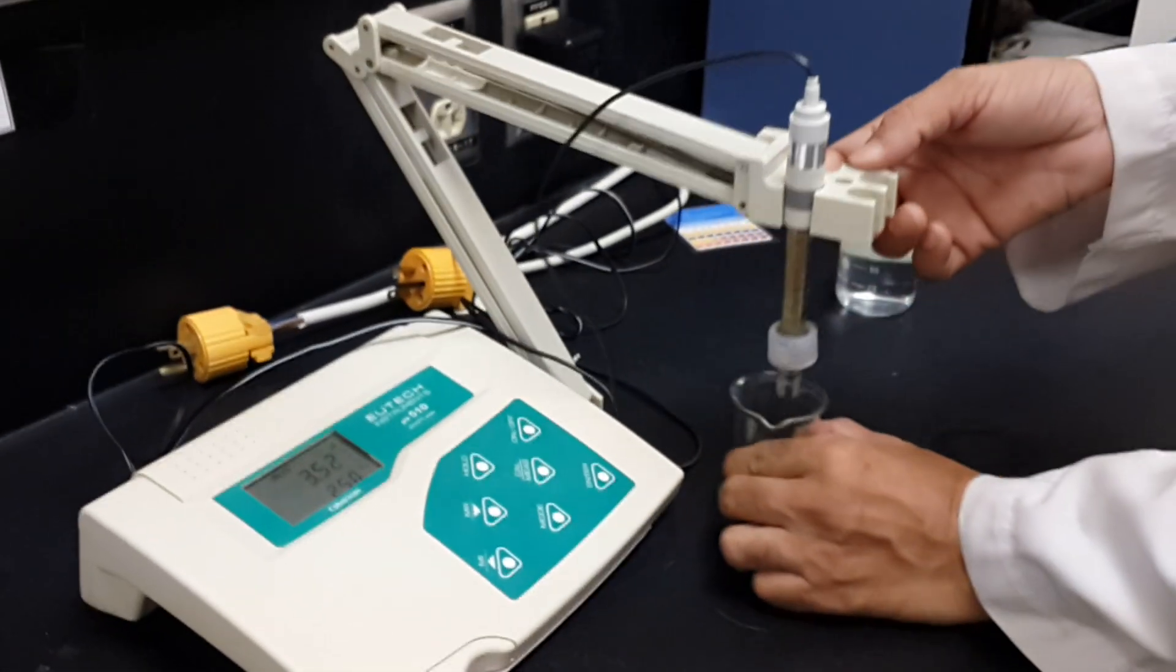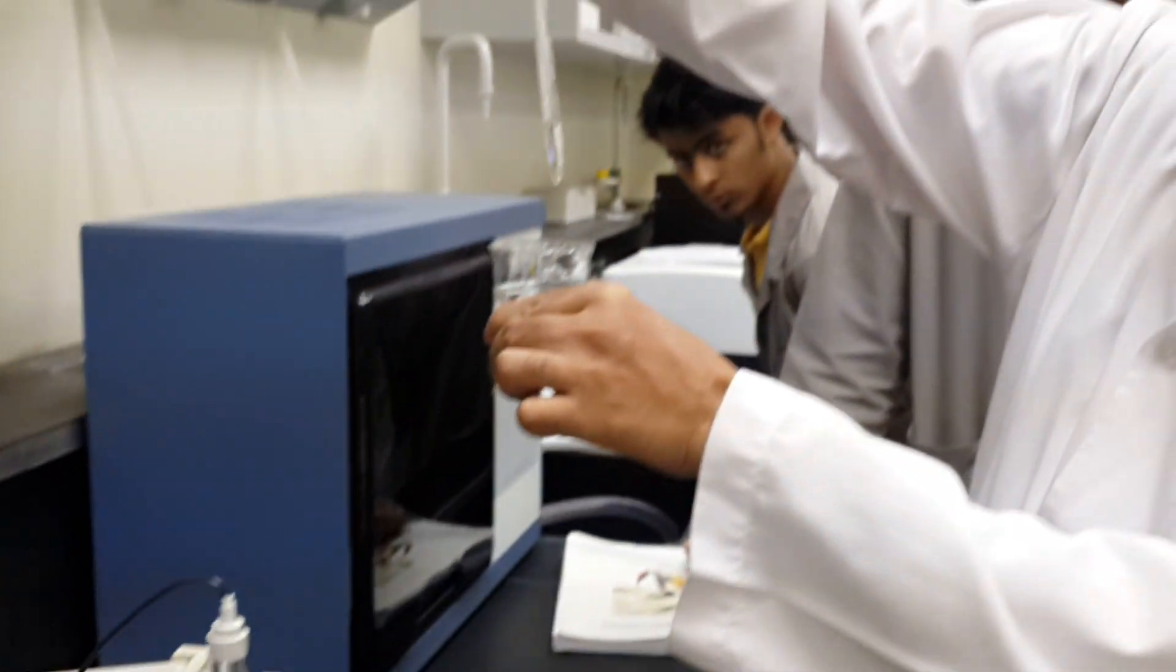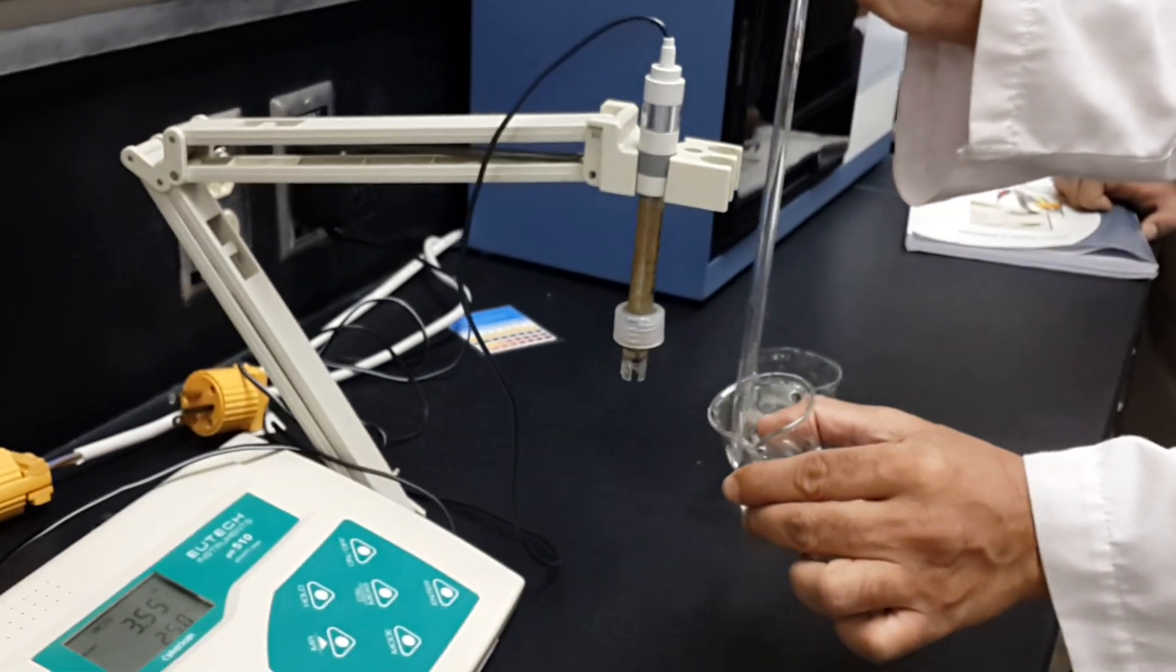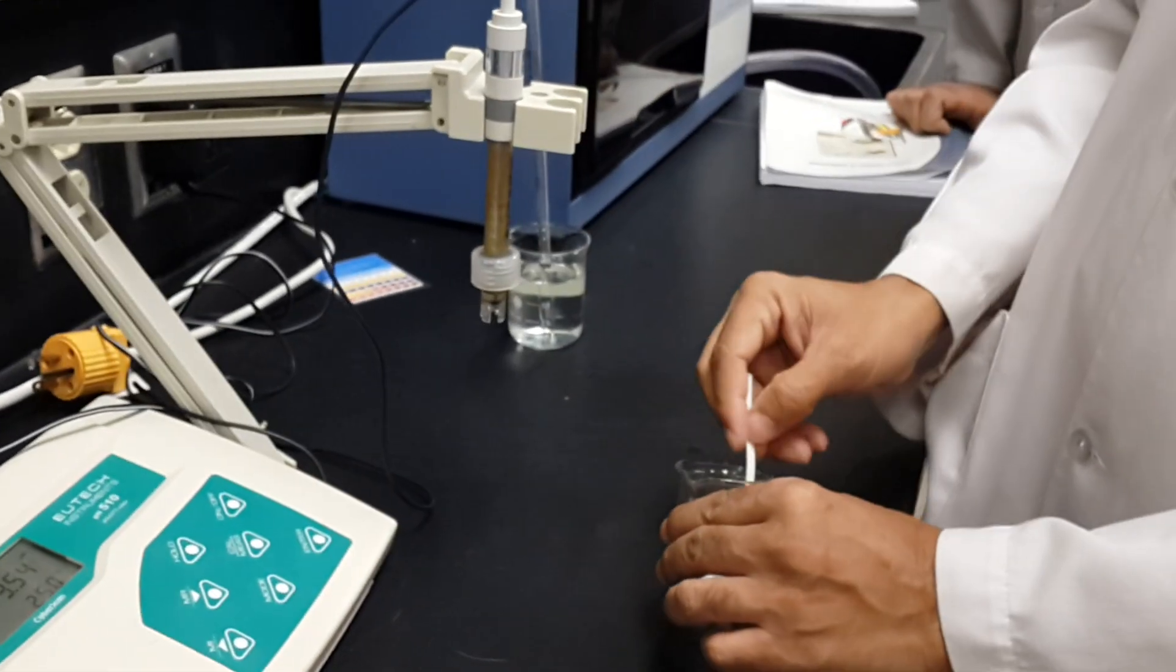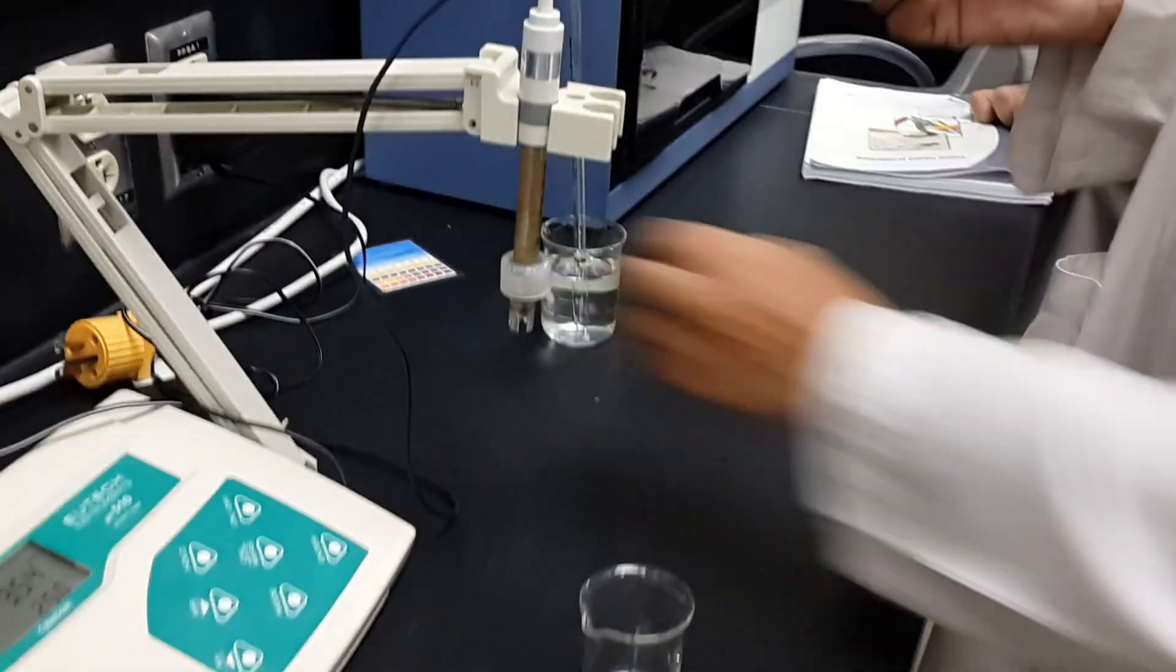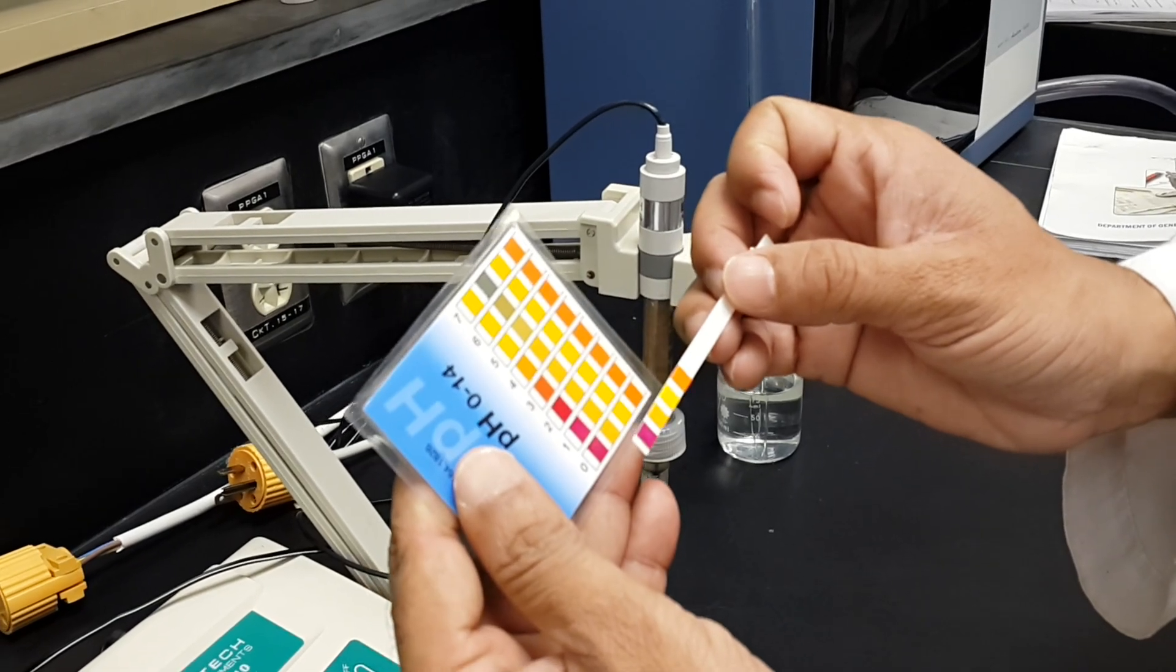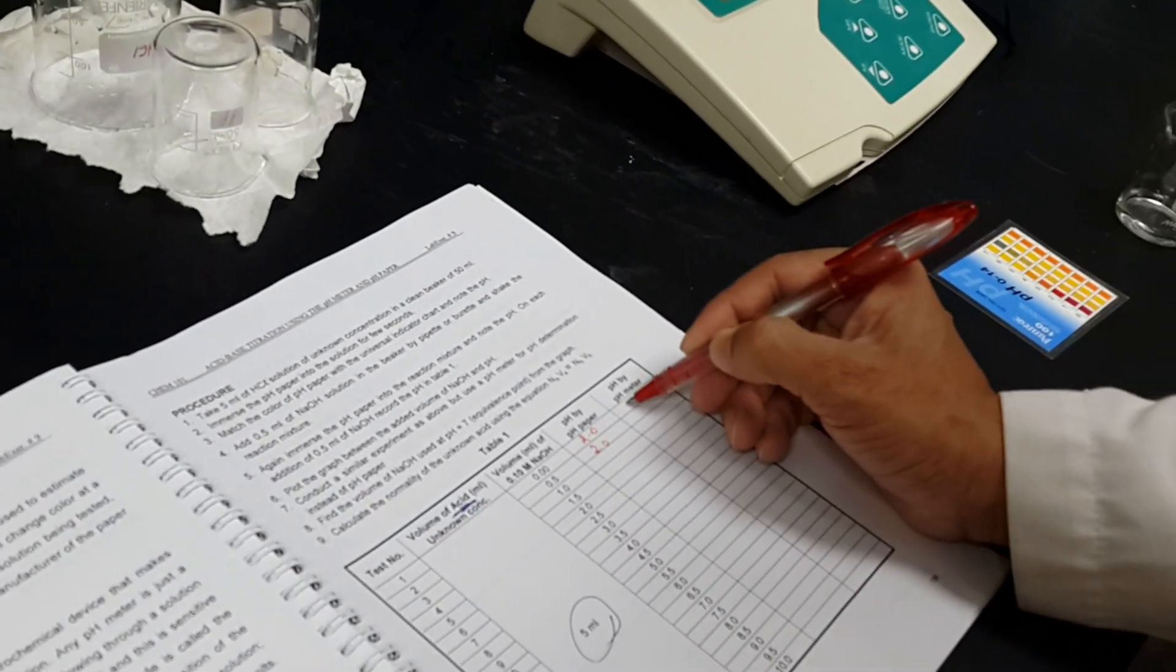Now you have to add 0.5 ml of sodium hydroxide. I am adding 0.5 ml of sodium hydroxide. After adding 0.5 ml of sodium hydroxide, use the pH paper again. When you compare this, again it will be 2. Take the highest reading. You have to record once again here: 2 for pH paper after adding 0.5 ml of sodium hydroxide, and 3.51 for pH meter.